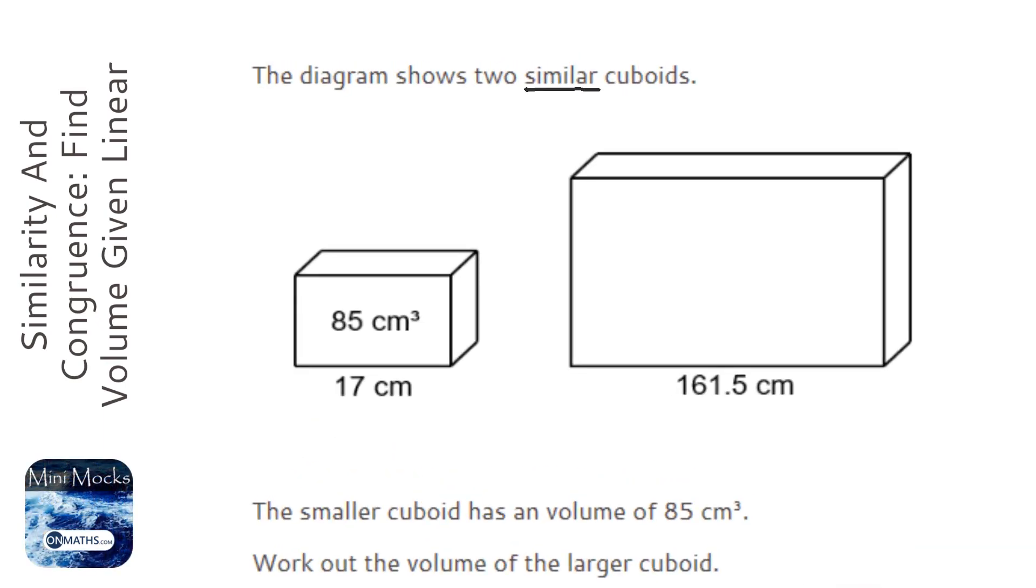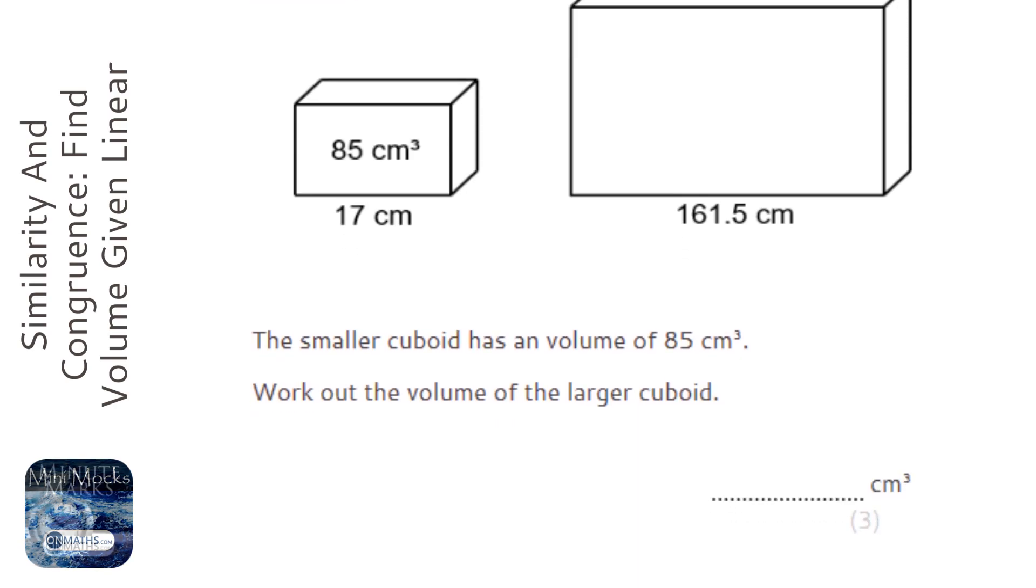Okay, so we're told we have two similar cuboids. Now that means one's a direct enlargement of the other, and we're given a length on both of them and the volume of the smaller one. We've got to find the volume of the larger one. So the first thing is work out the linear scale factor.